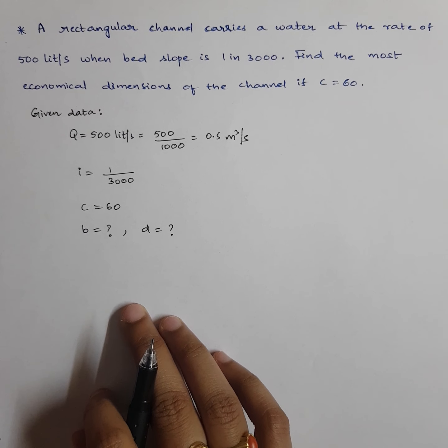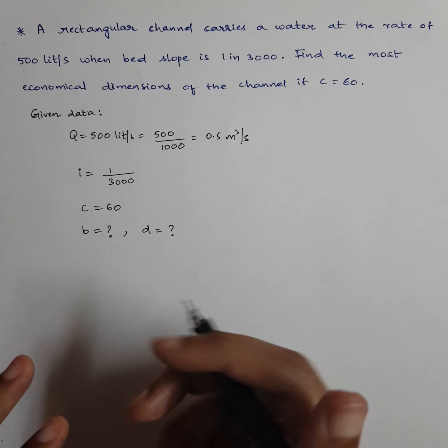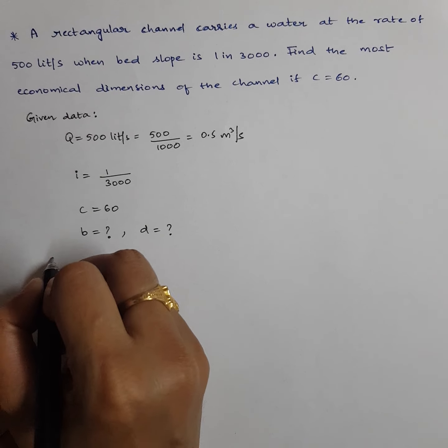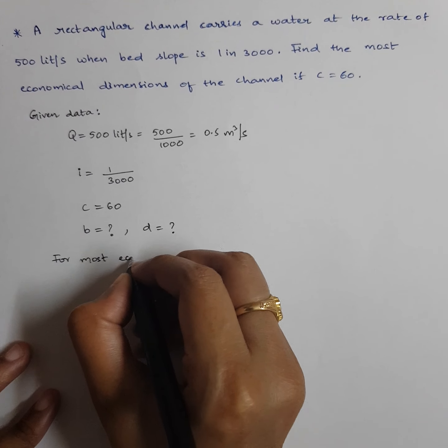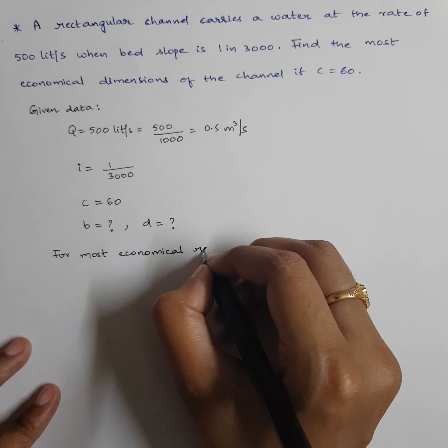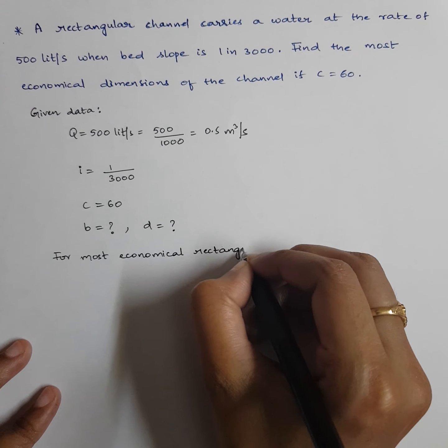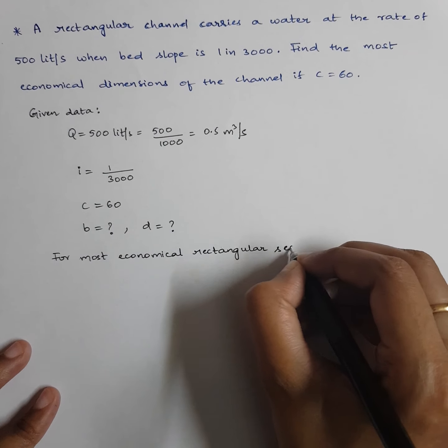Before calculating the unknowns, let's write the conditions for most economical section for a rectangle. For most economical rectangular section we have two conditions: first, B equals 2D; and second, hydraulic radius M equals D by 2. Since both B and D are unknown, I will write the entire equation in terms of one unknown.